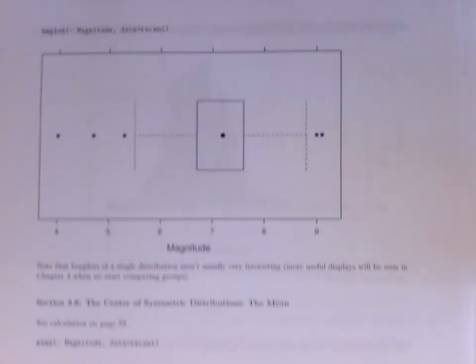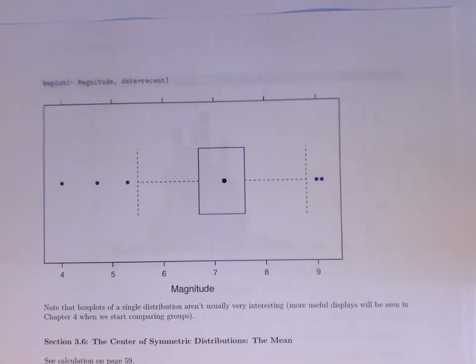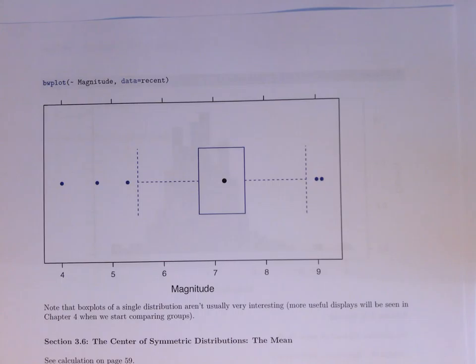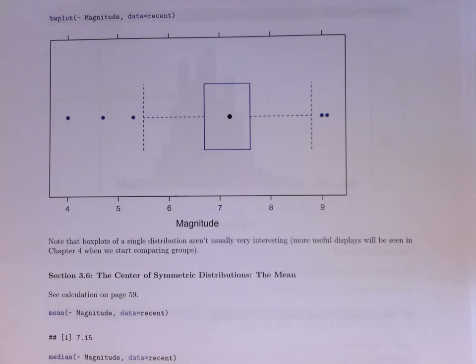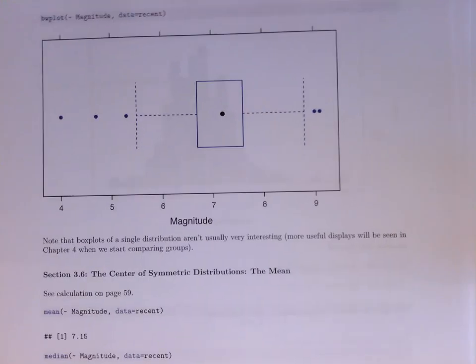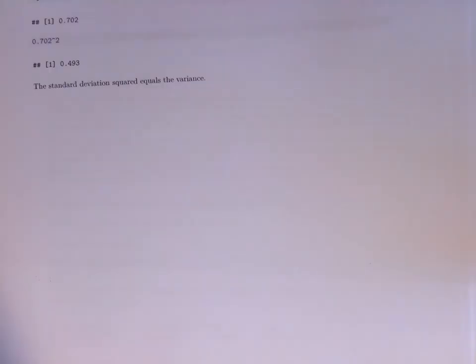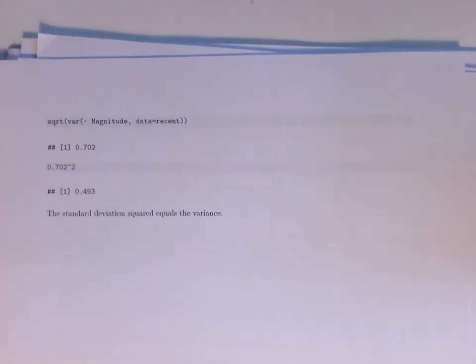A very useful function we'll be using a lot throughout the semester is this favstats function. So favstats, again, same syntax, tilde magnitude, and then data equals the name of the dataset to give us the actual value. We can generate box and whisker plots that are pretty boring if you just have a single plot and calculate other things like the standard deviation and the median.